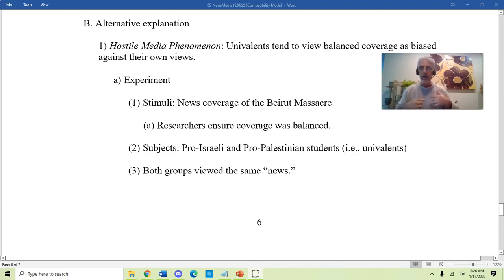And it's from this experiment that these researchers posit this idea of the hostile media phenomenon. And as you can see, the hostile media phenomenon is the idea that univalents tend to view balanced coverage as biased against their own views. Now, for what you've already learned about the memory-based model, this might make sense to you already. That when univalents see balanced coverage, they accept the information that supports their point of view. And then information that comes in that challenges their point of view, they counter-argue that. And thus far, I've just talked about whether they store it in memory or not. I haven't talked about how they feel about hearing that negative information. That's where we're going to get to now.